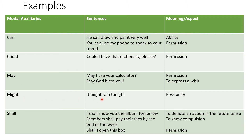Might: the sentence 'It might rain tonight' conveys possibility. Shall: 'I shall show you the album tomorrow' denotes an action in the future tense. The next sentence, 'Members shall pay their fees by the end of the week,' conveys compulsion.